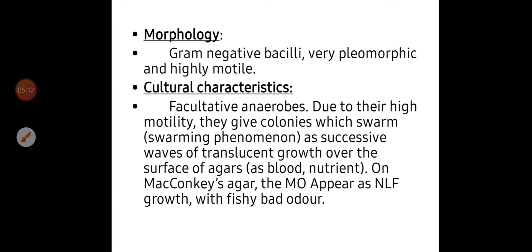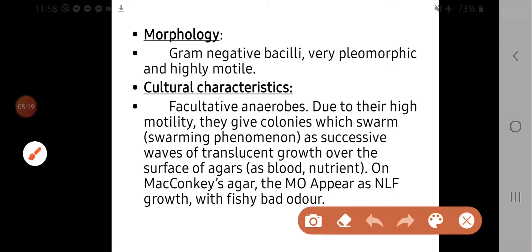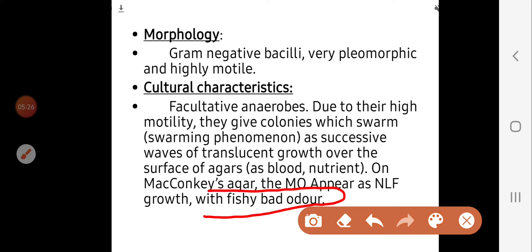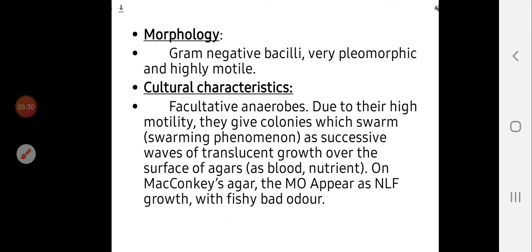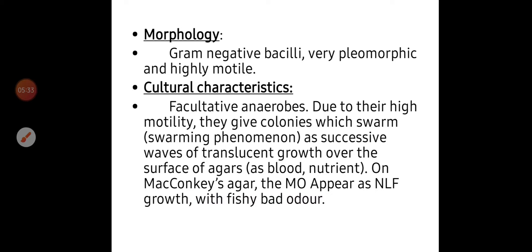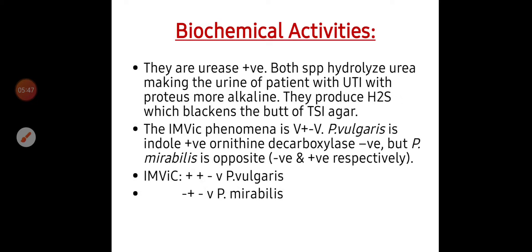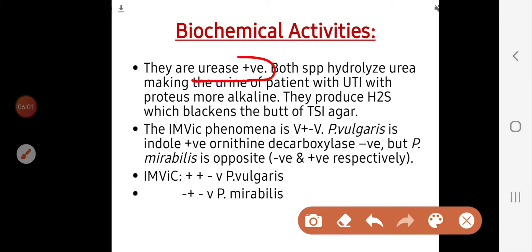On MacConkey's agar, because Proteus are non-lactose fermenters, they will produce colorless colonies. Another characteristic feature of genus Proteus is the production of a fishy bad odor — this odor is very characteristic. If you have lab experience, you will be able to identify Proteus by its bad smell. Another very important characteristic feature is that they are urease positive; urease positivity can distinguish genus Proteus from other members of Enterobacteriaceae.